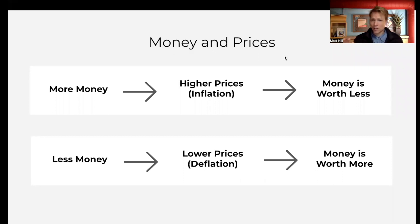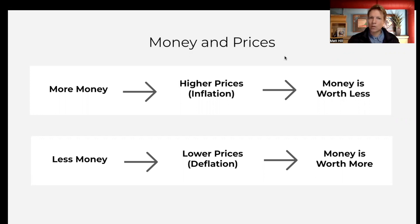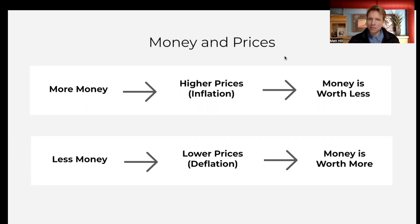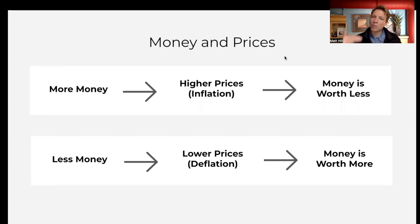So this is the fundamental relationship between money and prices: you have more money, prices go up, and therefore your money is worth less because it can buy fewer things on a dollar-for-dollar basis. If you have less money, then prices would go down — if we're back on the desert island and a dollar goes away, prices would come down, and now your money is worth more because it could buy more stuff. Higher prices is inflation; lower prices is deflation.